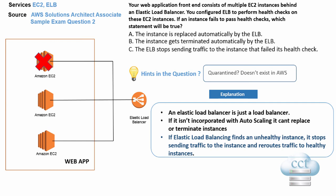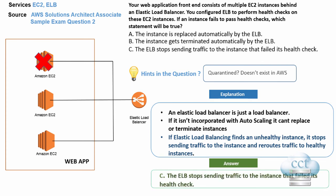I'm going to reiterate what I said earlier — when you get these questions, especially in an exam, if you look at the question and it doesn't make sense, have another read. Most of the time there will be answers that just don't make any sense and you can eliminate them straight away. So with all that, the answer is C — the ELB stops sending traffic to the instance that failed its health check.